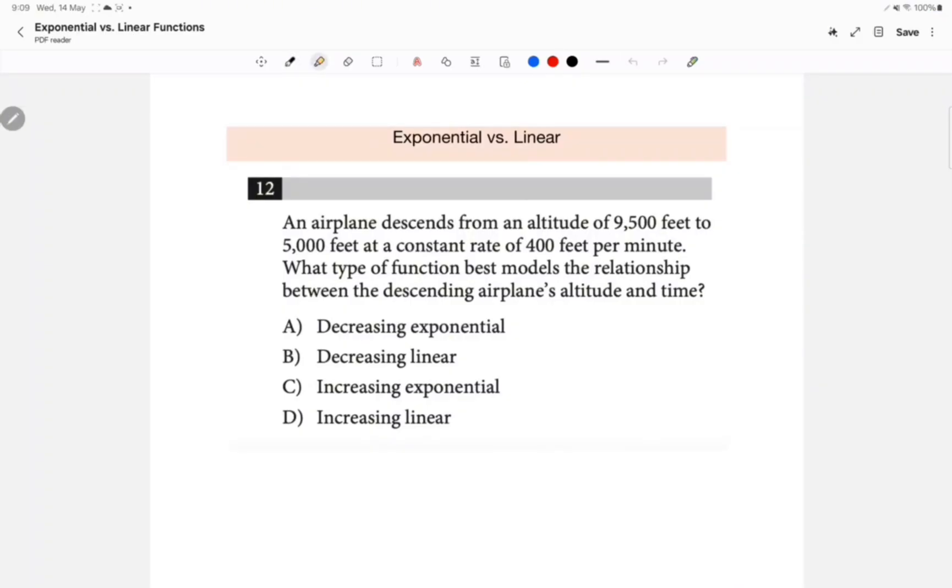What we have here is an airplane that's descending from an altitude of 9,500 feet to 5,000 feet at a constant rate. So if it's a constant rate, that means it's not going to be exponential. So it's not A and it's not C. A constant rate means a linear relationship, so it's going to be either B or D. But because we are descending, that means we are decreasing. So the answer is going to be choice B.